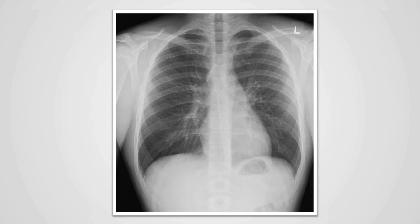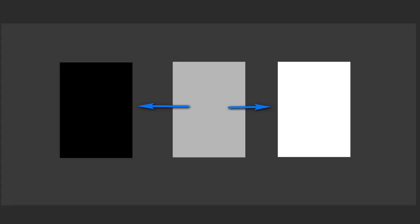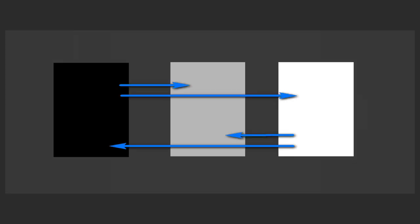When pathology occurs in the thorax, it causes the normal gray scale of the chest x-ray to change in several ways. A normal gray structure can become too black or too white, or a normally black structure can become gray or too white, or a normally white structure can become gray or too black.